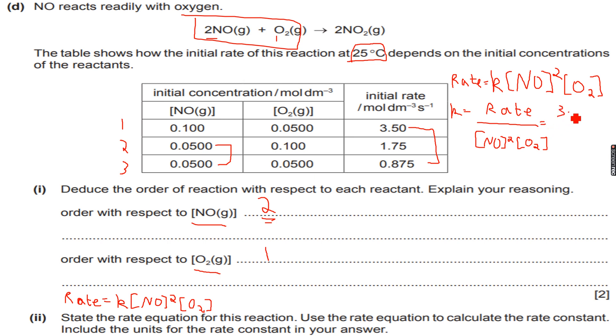3.5 over 0.1 squared multiplied by 0.05 and this is equal to... So 0.1 squared multiplied by 0.05 and we divide this by 3.5 so we get 7,000. So the value of k turns out to be 7,000.